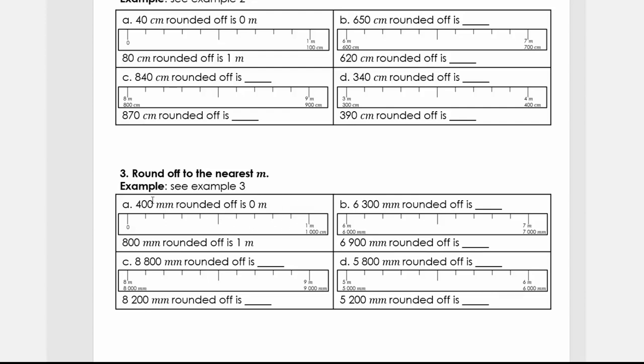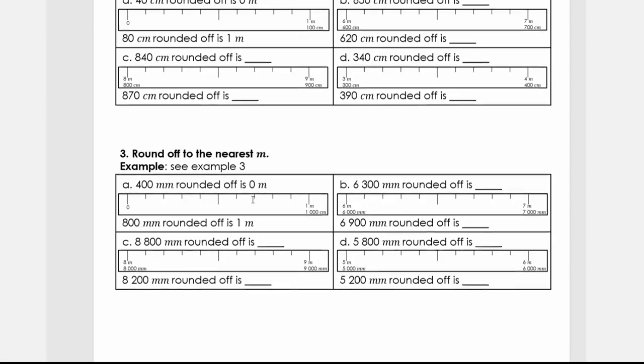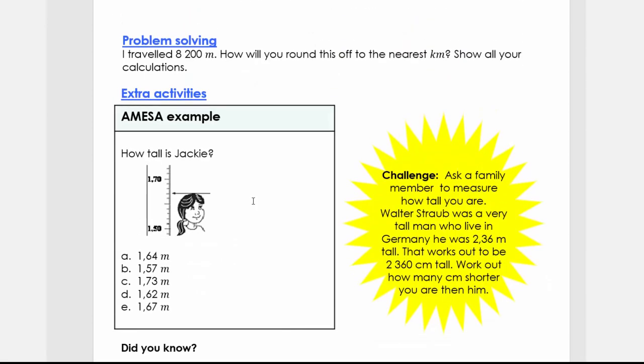I want you to pause and then do question number three. Then what you're going to do is the problem solving. Your extra activity always comes from old papers. This might be a bit challenging because of after the comma, but ask them how did they get those measurements.